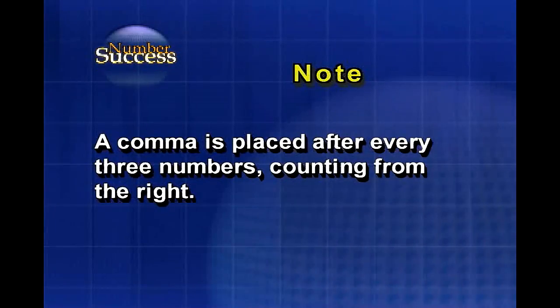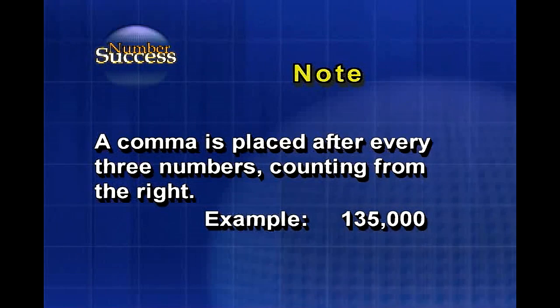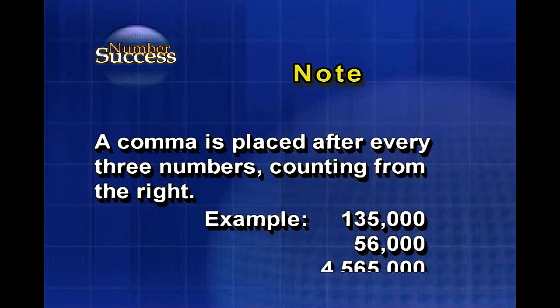Note, a comma is placed after every three numbers counting from the right. Example, 135,000, 56,000, 4,565,000.